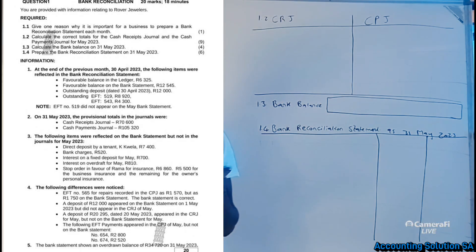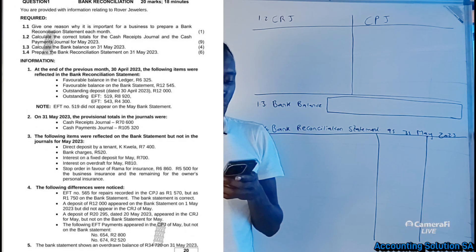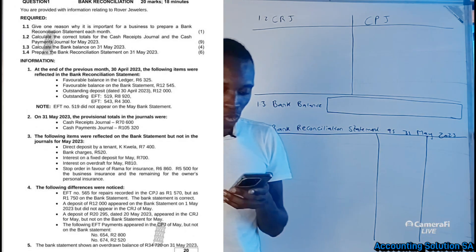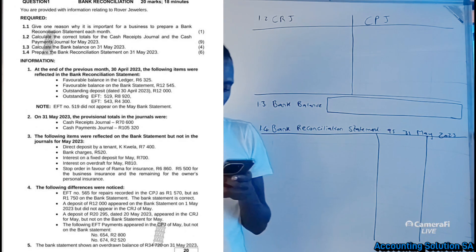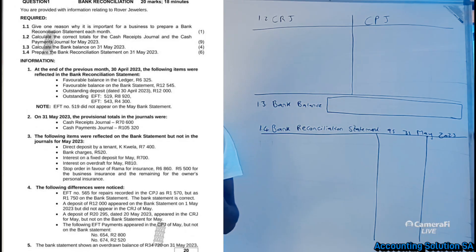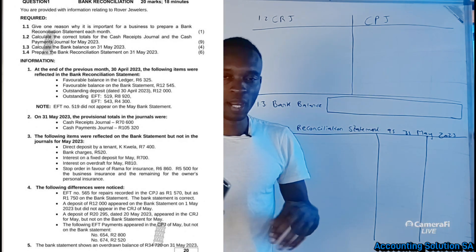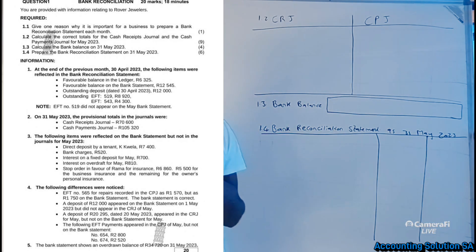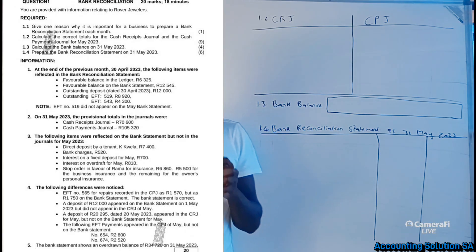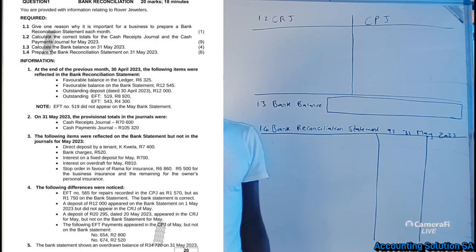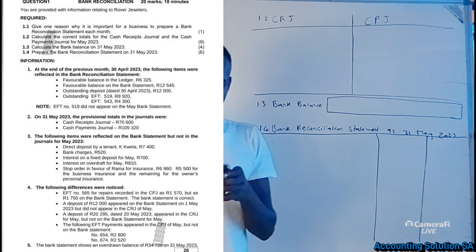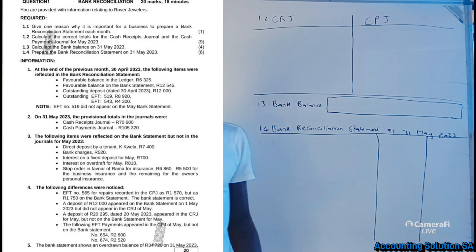Answer number one: according to the memorandum, the reason why to prepare a bank reconciliation statement is to improve internal control and to minimize fraud and errors, because records are checked against an external source. Before we allow external people to come to our company and do auditing, we must make sure that everything is correct. Number two: to compare the books of the business with those of the bank in order to detect errors or dishonesty at an early stage.